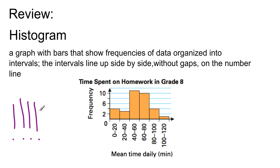Instead of having all 4 of those in individual bars, they're all grouped together. The intervals line up side by side without gaps on the number line. This is your histogram — and it looks a lot like a bar graph on the surface, but there are big differences we'll go through.